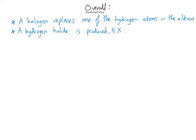Overall, in a free radical substitution reaction, a halogen has replaced a hydrogen atom in the original alkane, and a hydrogen halide has also been produced. The accepted abbreviation for hydrogen halide is HX, where X could be any halogen — HCl for hydrogen chloride, HBr for hydrogen bromide, HF for hydrogen fluoride, and HI for hydrogen iodide.